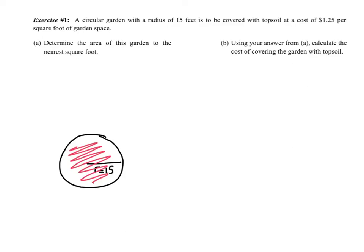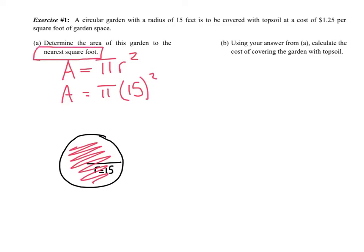Part A says determine the area of this garden to the nearest square foot. Area equals pi r squared — plugging in my radius, pi times 15 squared. It does say to the nearest square foot, so I use my calculator, and I get 707 feet squared.